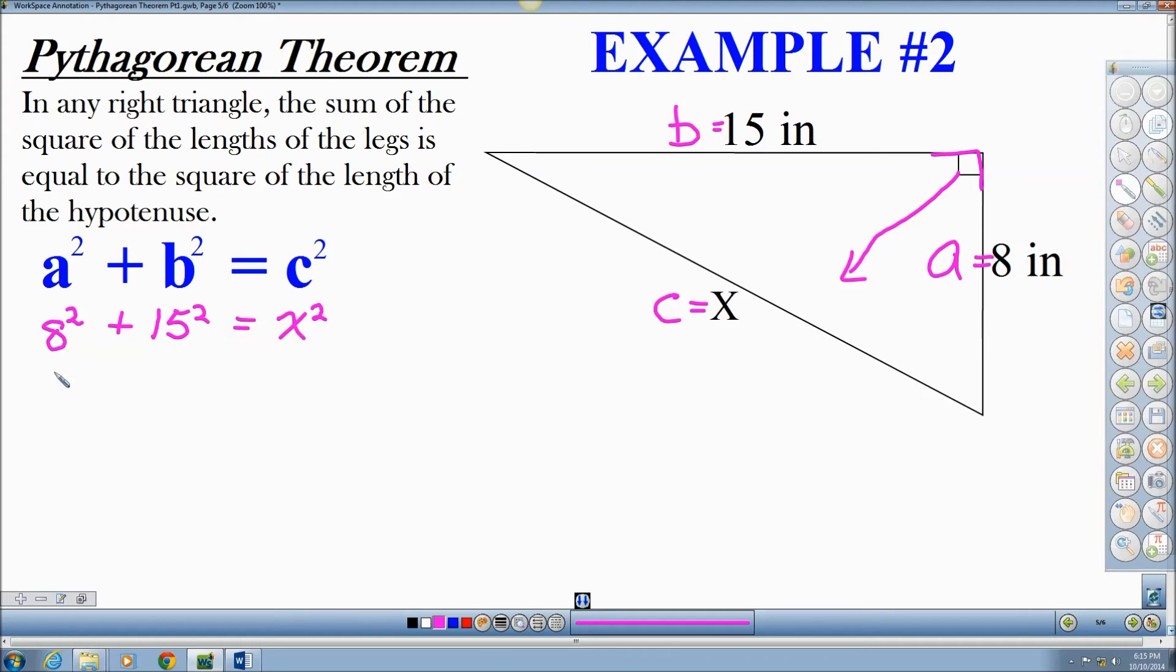8 squared is 64. 15 squared is 225. And this equals X squared. 64 plus 225 is 289. And this is equal to X squared.